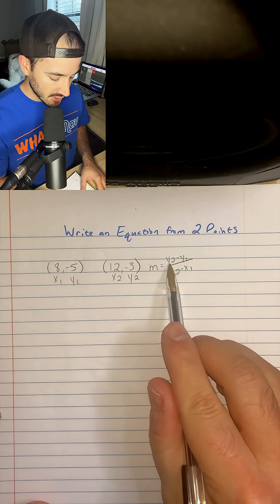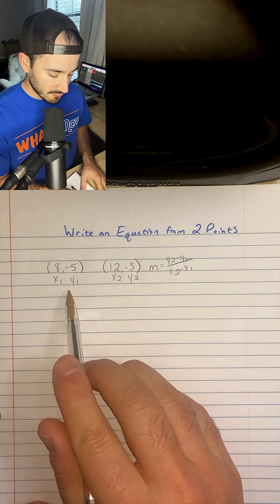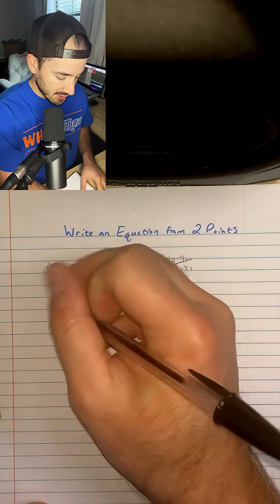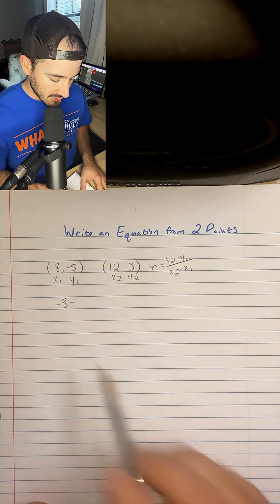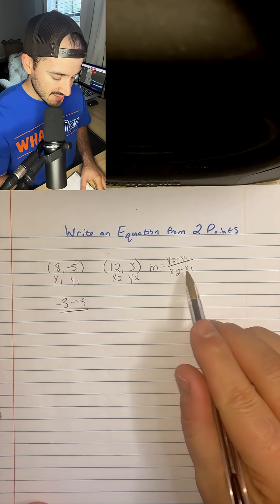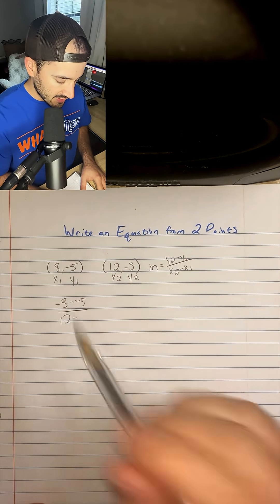So now we're just going to plug in each number as they're labeled and we're going to find the slope. So y2 minus y1 is going to be negative 3 minus negative 5 over x2 minus x1, which is 12 minus 8.